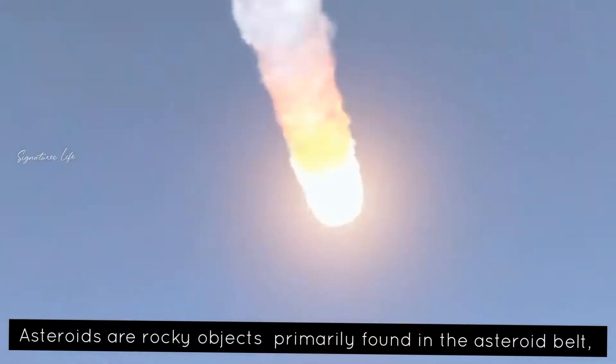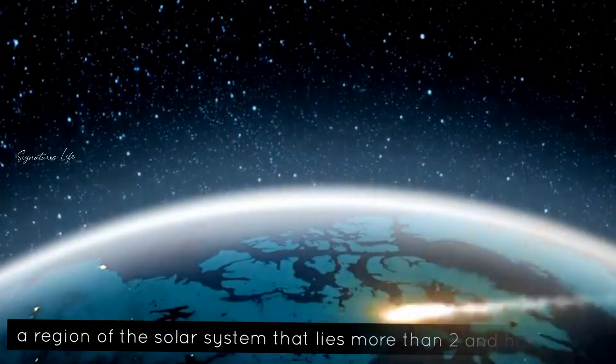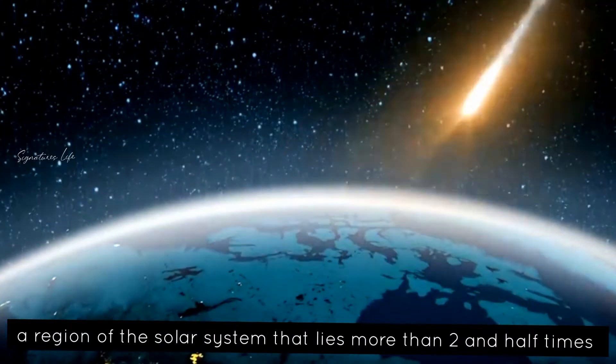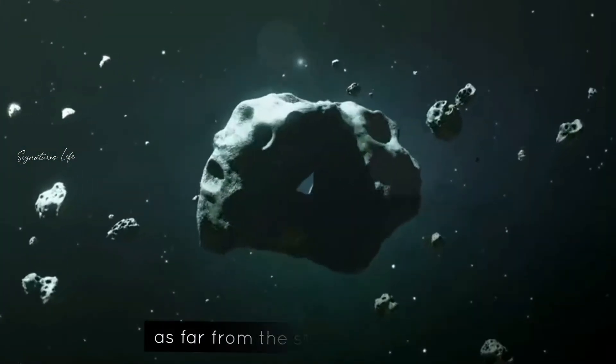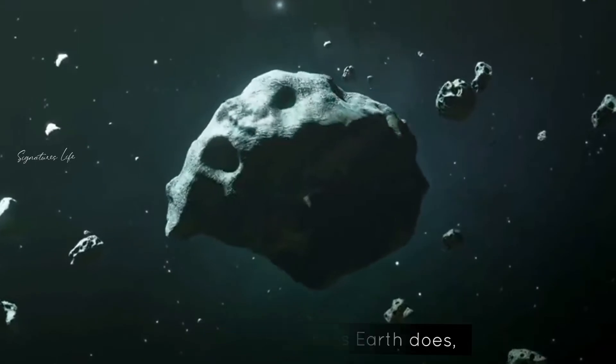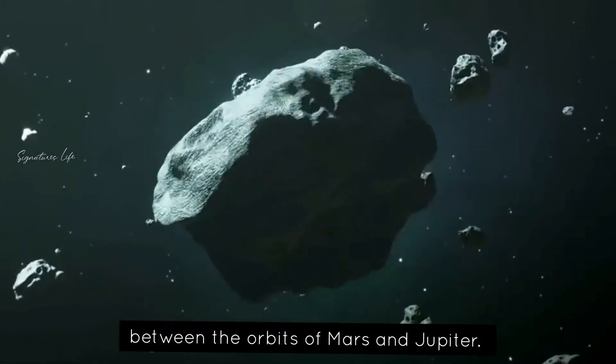Asteroids are rocky objects primarily found in the asteroid belt, a region of the solar system that lies more than two and a half times as far from the Sun as Earth does, between the orbits of Mars and Jupiter.